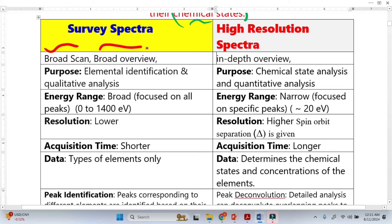When the elements are unknowns, we have to run survey spectra. This is also called qualitative analysis because we are only looking for symbols - whether iron exists, whether oxygen, whether carbon, etc.